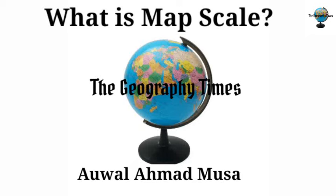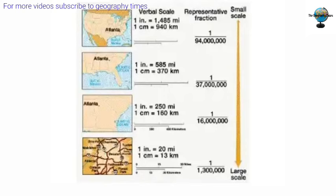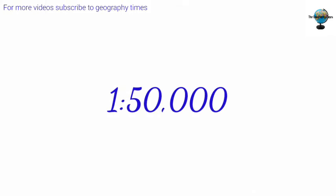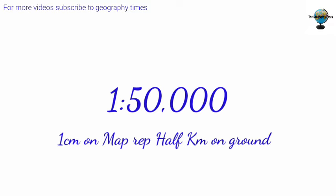Map scale is the ratio between the distance covered on the map and the corresponding distance on actual ground. It shows the relationship between the distance of two points on a map and the actual distance between them on the ground. For example, if a map has a scale of 1:50,000, then one centimeter on the map will represent half a kilometer on the ground.